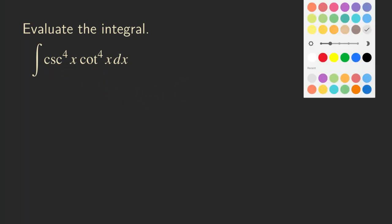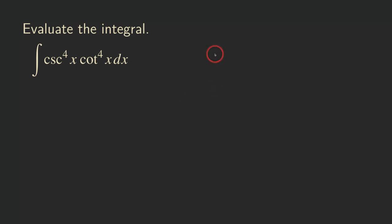Before I start writing down the first step, I want to recall something important because we're going to use it. This is the Pythagorean identity for the cotangent and cosecant: cotangent squared plus one is equal to cosecant squared theta.